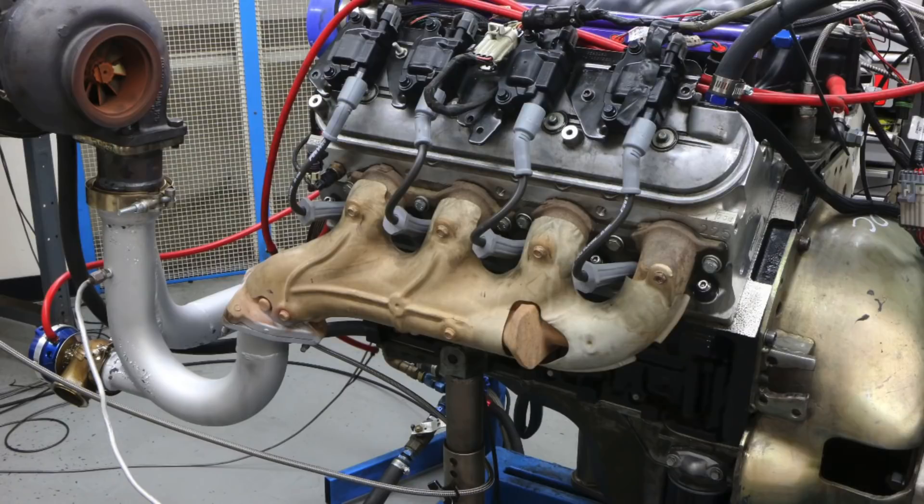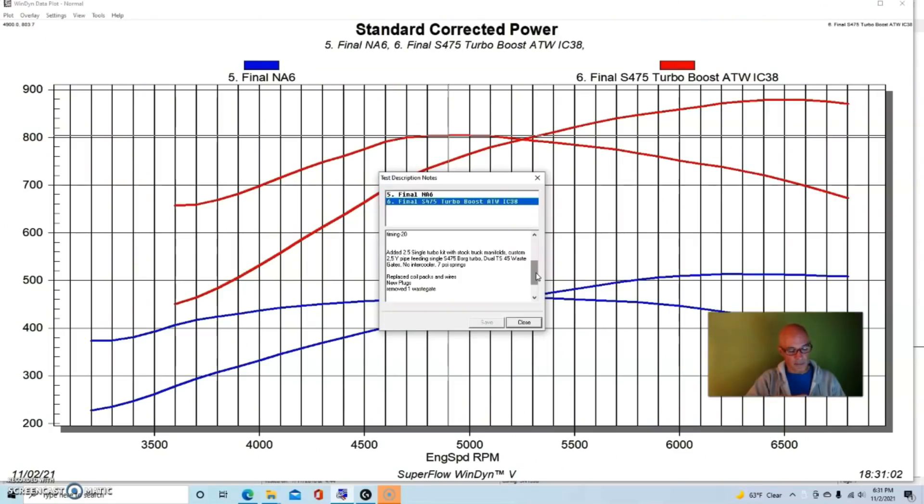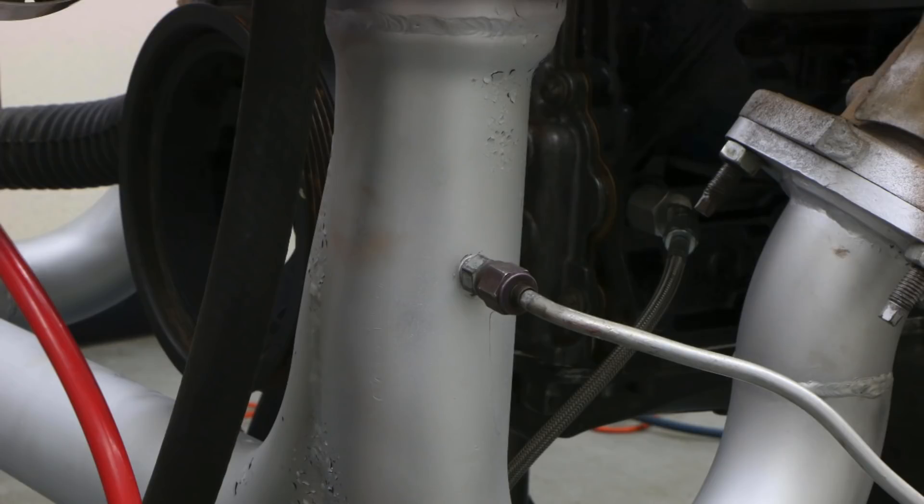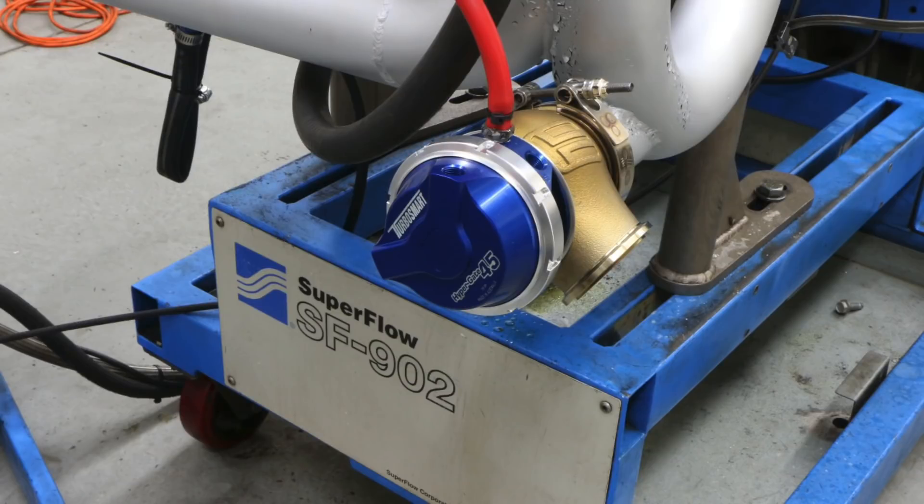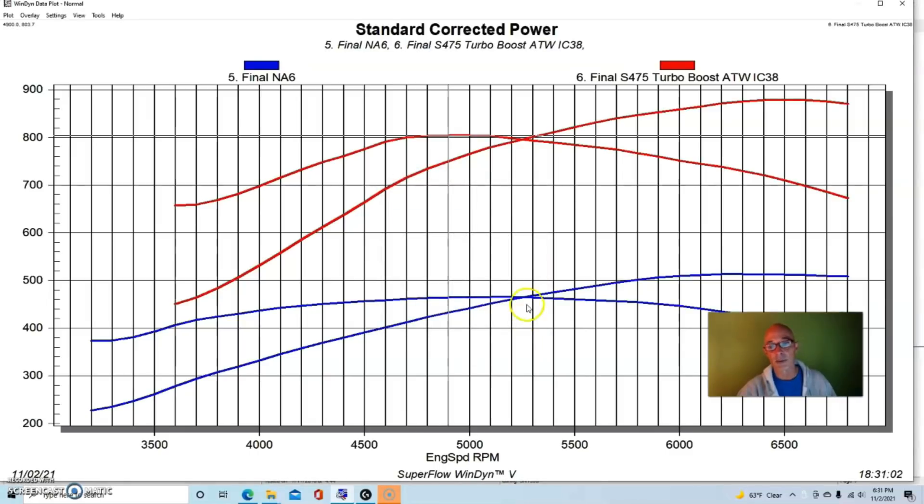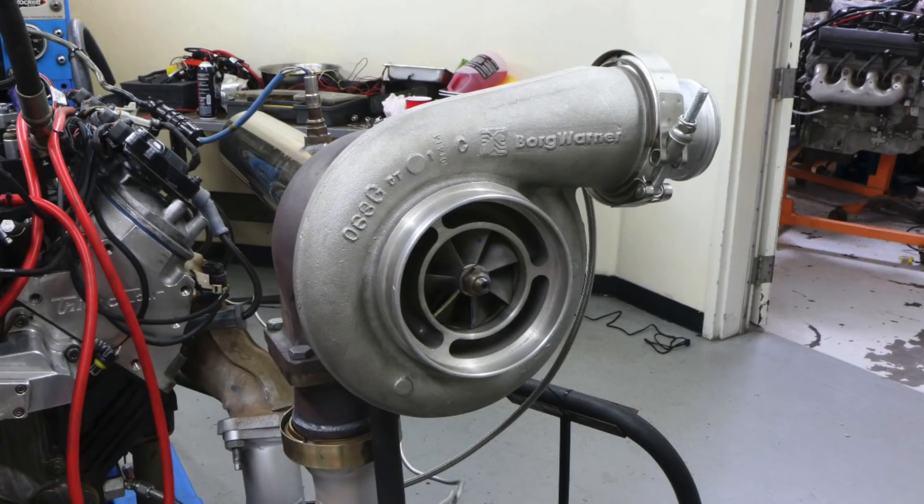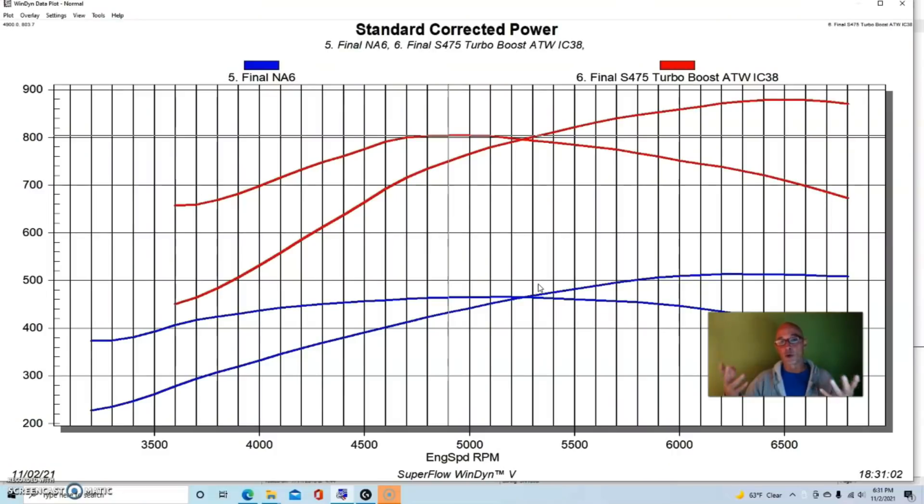We had our truck exhaust manifolds and our single Y pipe feeding the three inch V-band going to our V-band to T4. We had two 45 millimeter wastegates on it from the guys at TurboSmart. We had a seven pound spring and I was using a manual wastegate controller, which is part of the problem with this test that I did, and I'll show you what I'm talking about.